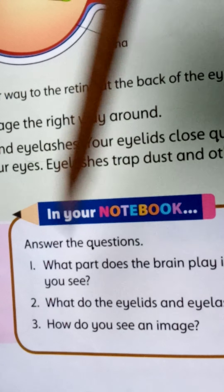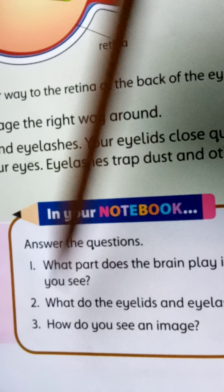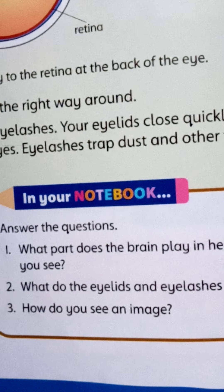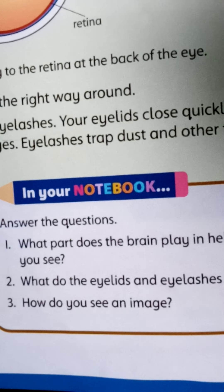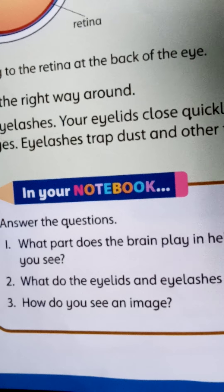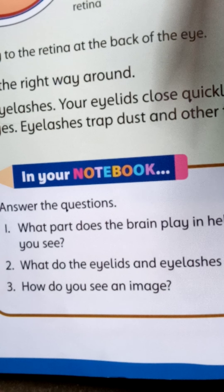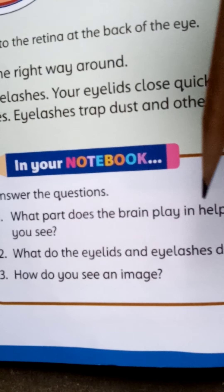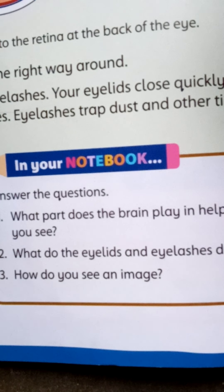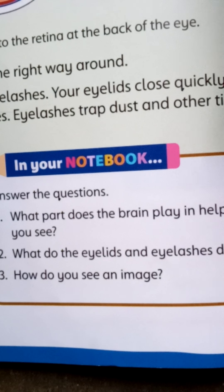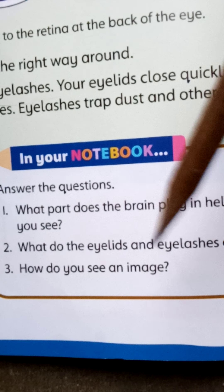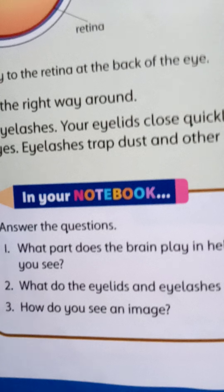Here are three questions about the eye. We have already revised the first question. Question two: What part does the brain play in helping you see? What is the work of your brain? Question three: What do the eyelids and eyelashes do? We have now covered these functions.